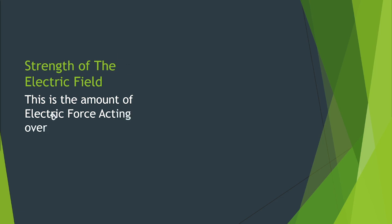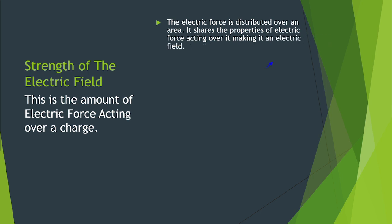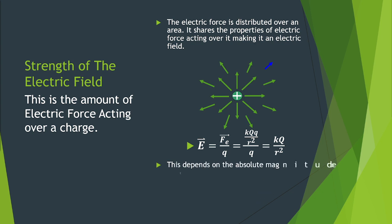Strength of the electric field. This is the amount of electric force acting over a charge. The formula for the electric field E is equal to F sub E, the electric force, divided by the magnitude of the charge Q. This depends on the absolute magnitude of the charge and the distance at which the test charge is placed.